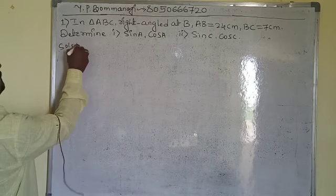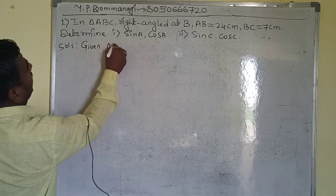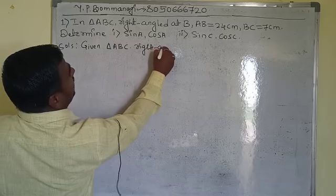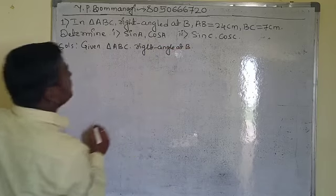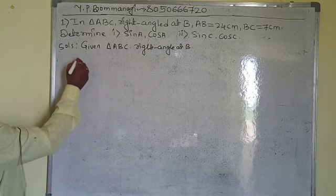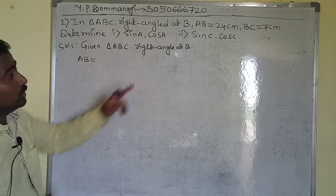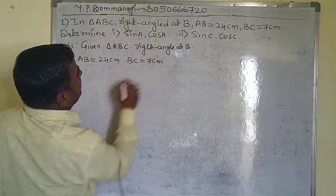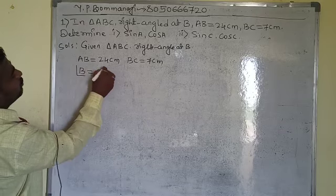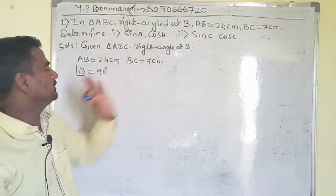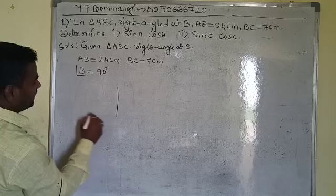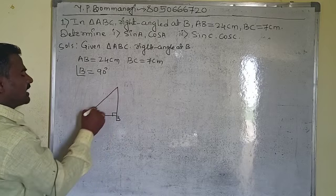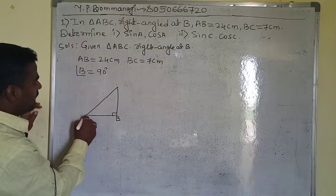Solution: Try to understand — they have given triangle ABC where the right angle, meaning exactly 90 degrees, is at B. So construct this triangle first. Length AB is 24 centimeters, length BC is 7 centimeters, and angle B is 90 degrees. I am placing the right angle at B so that I can construct the triangle correctly.